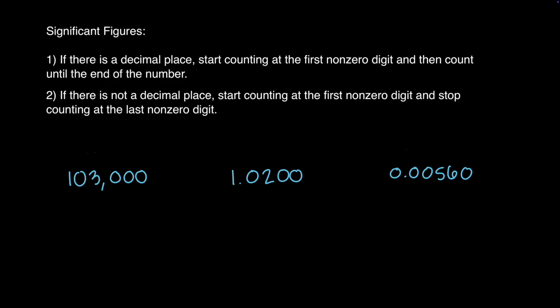For 103,000, there is no decimal place, so I will start counting at the first non-zero digit and stop counting at the last non-zero digit. Scanning from left to right, 1 is the first non-zero digit and 3 is the last non-zero digit. The value has 3 sig figs.